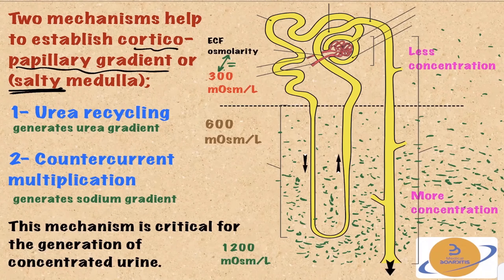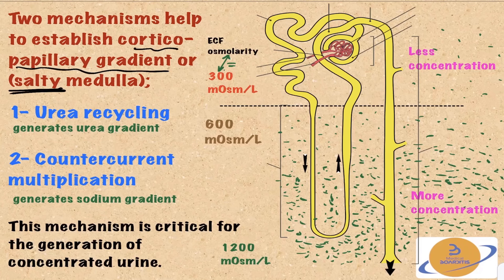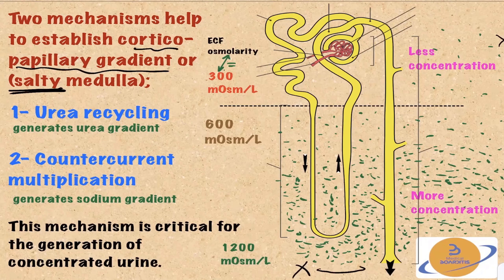Juxtamedullary nephrons have their loop of Henle digging more deeply into the medulla, and the more we go deep into the medulla, the more concentrated it becomes. This is the responsibility mainly of the juxtamedullary nephrons, even though they only constitute 15% of the entire number of nephrons in the kidney.